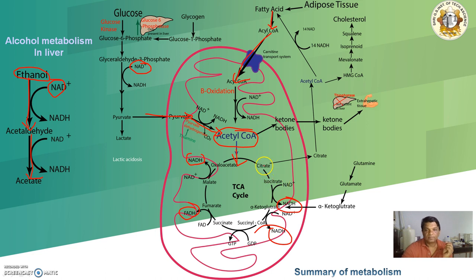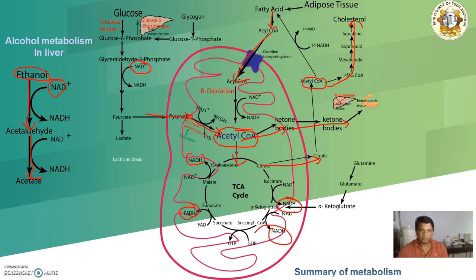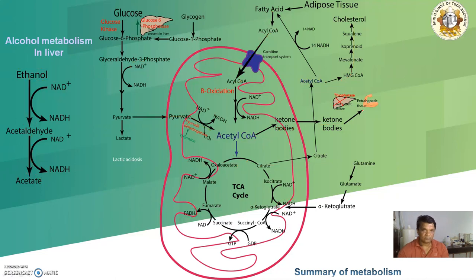For acetyl-CoA to move out of the mitochondria, it must be exported as citrate. Oxaloacetate combines with acetyl-CoA to form citrate, and only then can citrate move outside the mitochondria, where it is converted back to acetyl-CoA and then into cholesterol. Acetyl-CoA can also be converted into ketone bodies, which travel to other parts of the body and provide energy. Overall, acetyl-CoA is the central, most important compound in these processes.